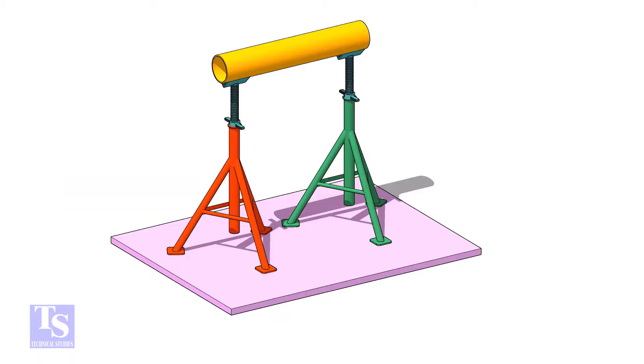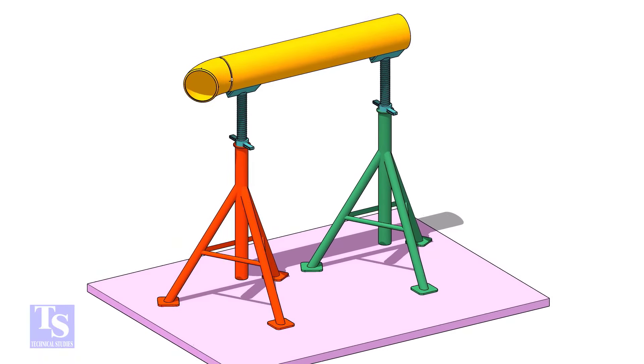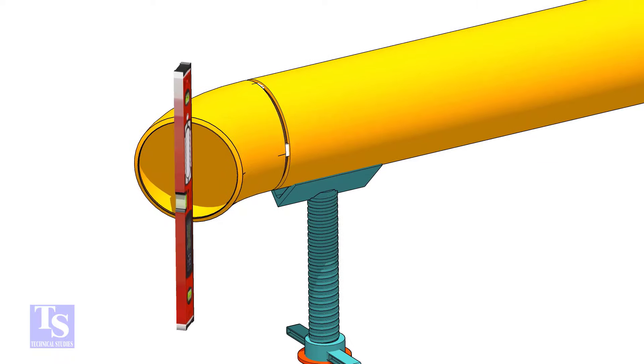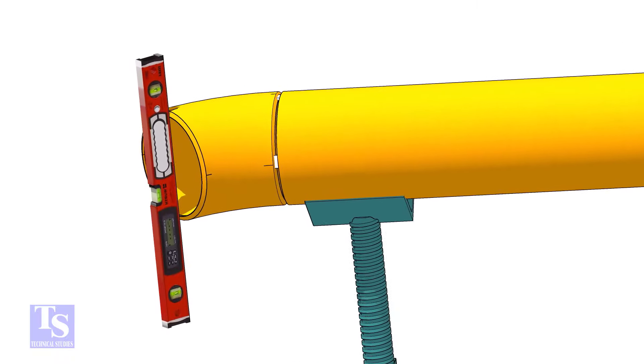Tack weld one elbow on a piece of the same size pipe. Put the left elbow on both sides. Level the elbow face through the center marks.